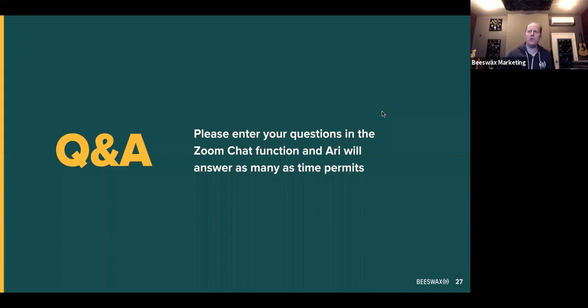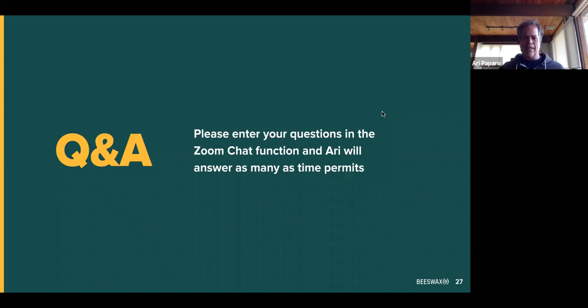Where do you feel second-party data sits within all this, especially given how easily it can be commoditized? Second-party data generally refers to publisher data — which I've actually been referring to as first-party data in this presentation. When I'm talking about a publisher collecting data and making it available to an advertiser, that is second-party data, and I think it's really important. It's going to be a big part of how publishers react to the lack of identity, but it has severe limitations because it's very difficult to use across sites.